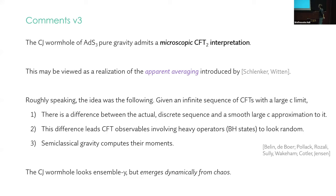Some more comments. So let me emphasize this wormhole admits a microscopic CFT interpretation. And I want to view this as a kind of realization of the apparent averaging phenomenon introduced by Schlenker and Witten, which, roughly speaking, put forth the idea as follows. When we talk about holography, we really are talking about a sequence of CFTs with ever increasing central charge and taking a large C limit. Now, in a large C limit, there's a difference between the actual discrete sequence of theories and the smooth large C approximation to them and their data. And this difference is what leads CFT observables involving heavy operators, black hole states whose dimensions depend on C, to look random. And what semi-classical gravity is computing are their moments.